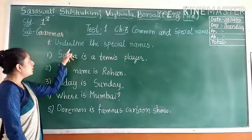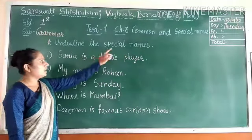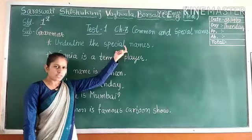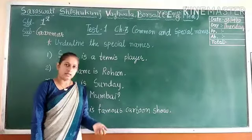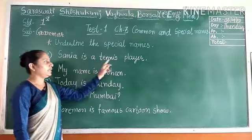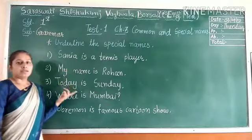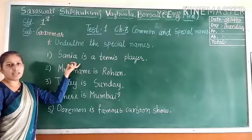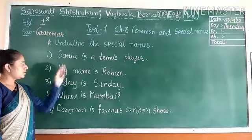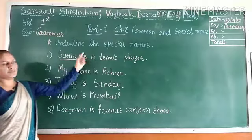Now let's do the exercise: underline the special names. Some sentences are given and you have to underline only the special names. The rule is that special names always begin with capital letters. First: Sanya is a tennis player. Which word starts with a capital letter? Sanya — S is capital. So underline this word. Sanya is a special name.